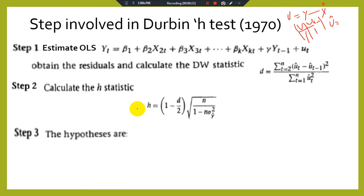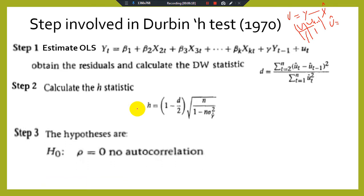Step 3 — Develop your hypothesis. The null hypothesis is that rho equals zero, meaning there is no autocorrelation. The alternative hypothesis is that rho is not equal to zero, indicating that there is autocorrelation present.